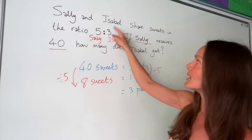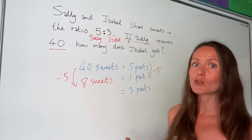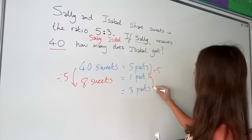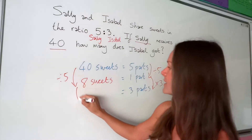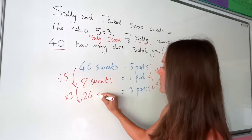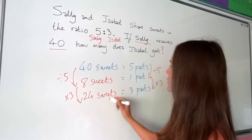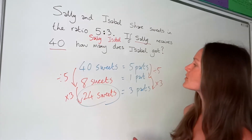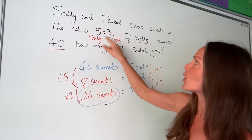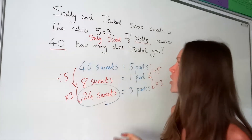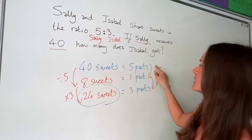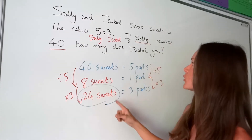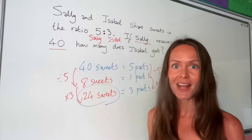Now we can work out how many sweets Isabel gets. Isabel is three parts, so we multiply that one part by three. Eight multiplied by three gives us twenty-four. So Isabel gets twenty-four sweets. The key things to remember: the order of names tells you who gets how many parts, write down the given information, then find what one part equals before working out the final answer.